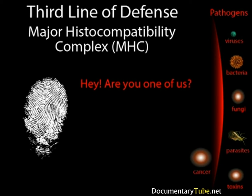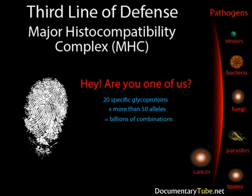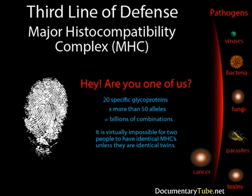How does the lymphatic system know your blood cells from other blood cells? There are about 20 specific glycoproteins which exist on the cell membrane of every cell in your body. This collection of proteins is called the major histocompatibility complex, or MHC for short. The structure of these proteins is determined by 20 genes in your DNA, each of which has more than 50 alleles. Thus, there are literally billions of combinations of these alleles, and each combination produces a unique MHC. As a result, it is virtually impossible for two people to have identical MHCs unless they are identical twins. The MHC, then, is a fingerprint for your cells. Any cell that has your MHC will not be attacked by your lymphatic system because the cell has the correct fingerprint.